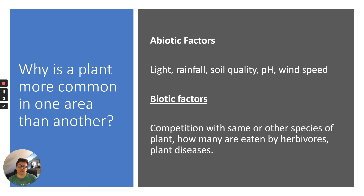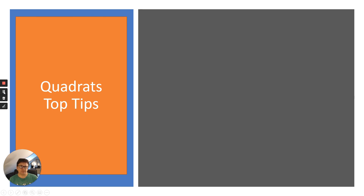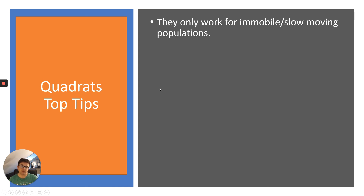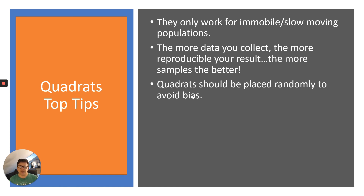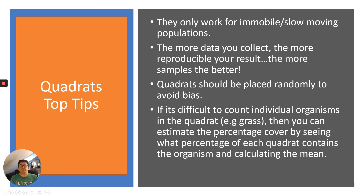Quadrat top tips: they only work for immobile or slow-moving populations. The more data you collect, the more reproducible and valid your results — so more samples is always better. Quadrats should be placed randomly to avoid bias; use a random number generator to decide placement. If it's difficult to count individual organisms (e.g., grass), estimate the percentage cover by seeing what proportion of the quadrat contains the organism, then calculate a mean.